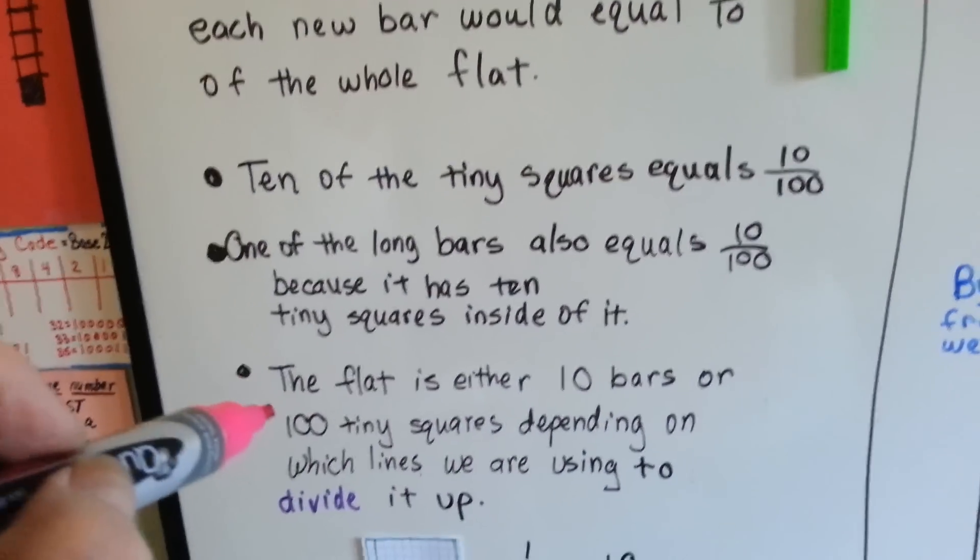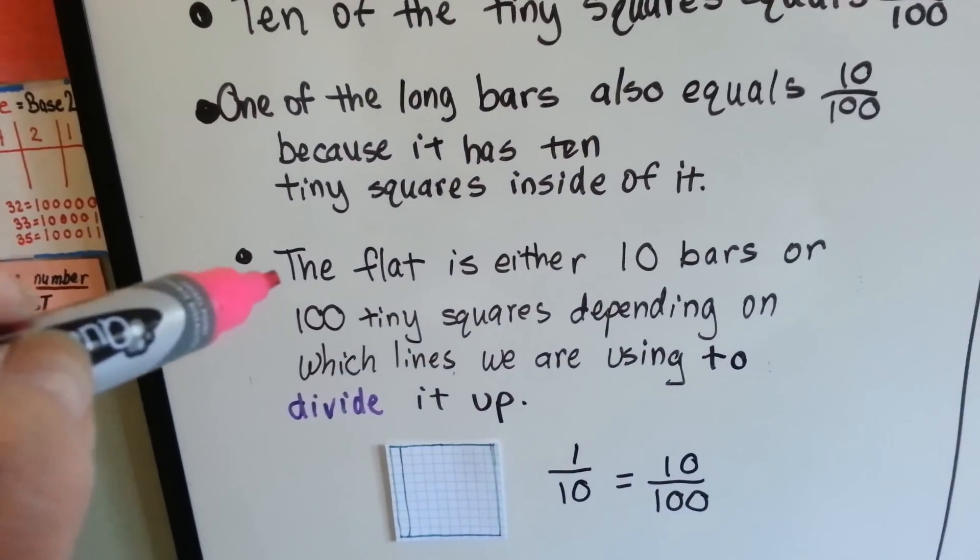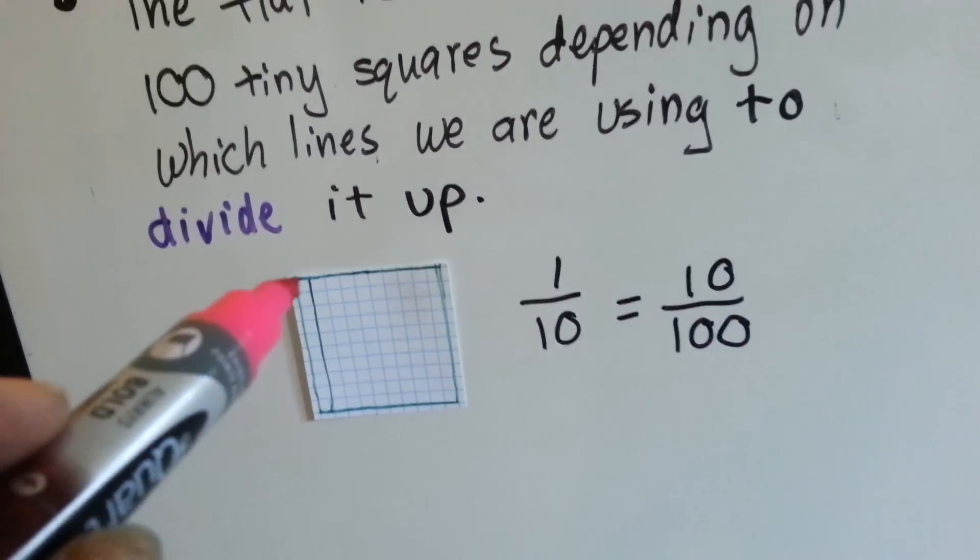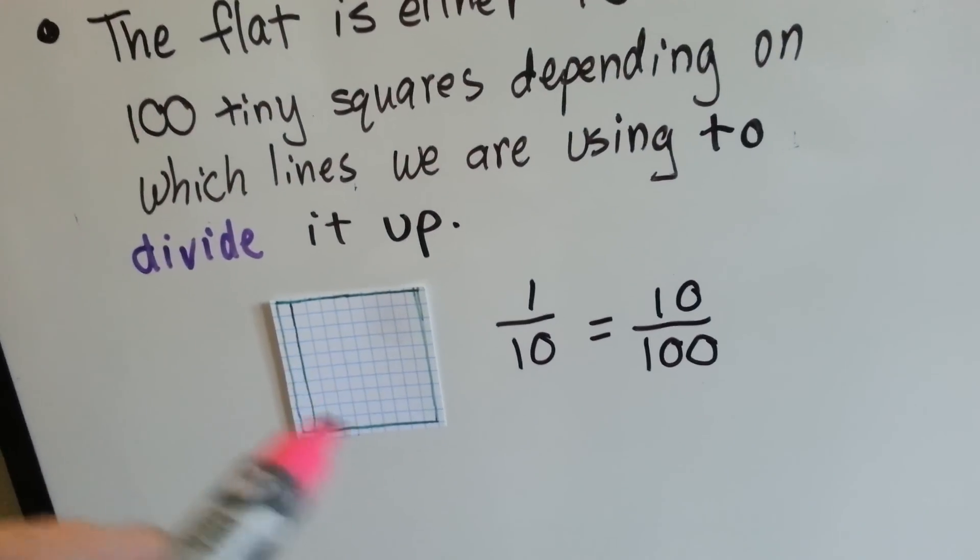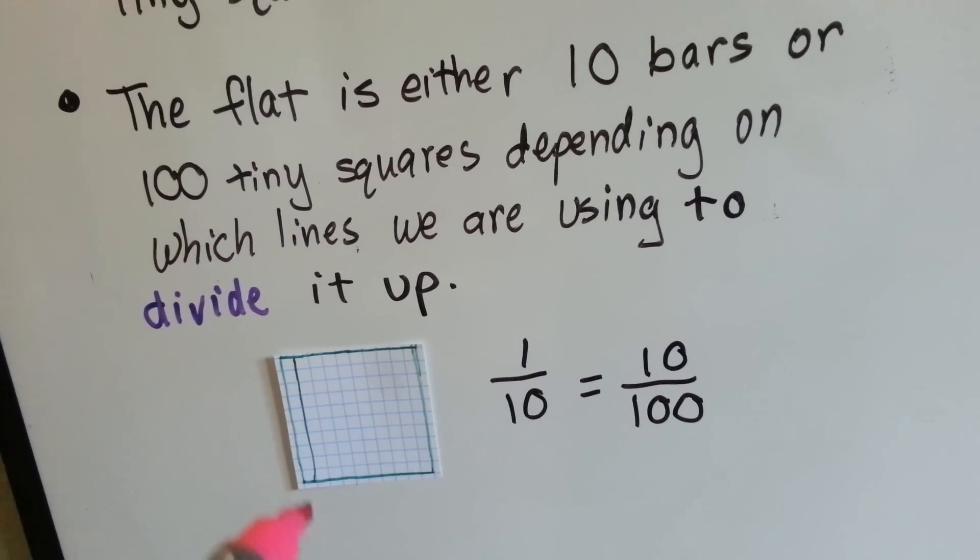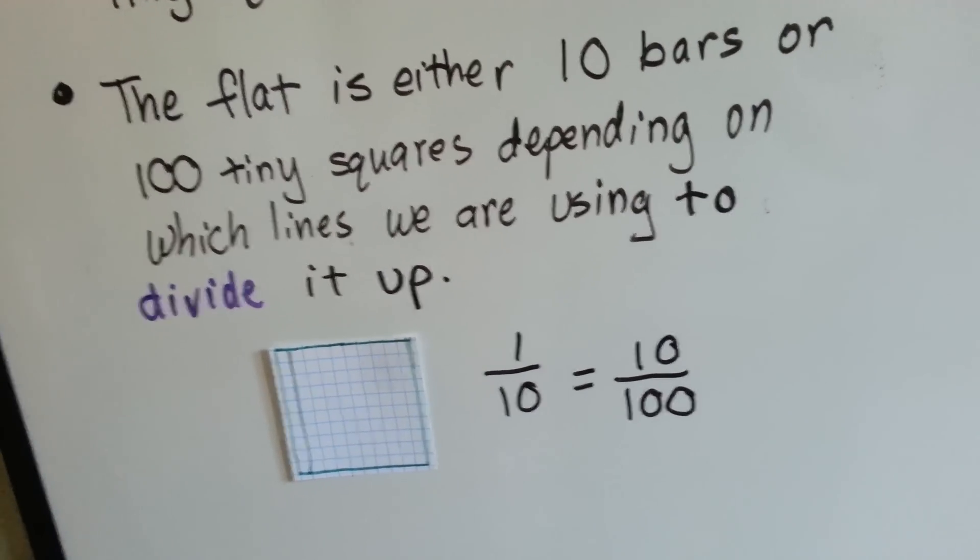The flat is either ten bars or one hundred tiny squares, depending on which lines we are using to divide it up. It could be a bar, or we could just say that there's a hundred squares. It could be one tenth, or it could be ten one hundredths.